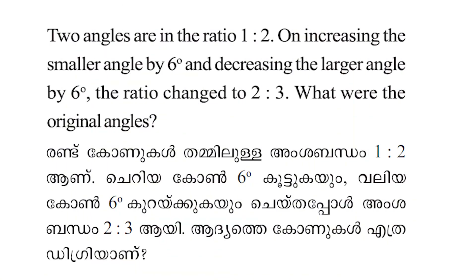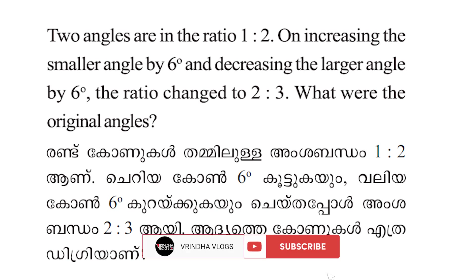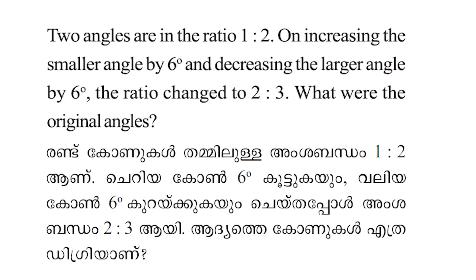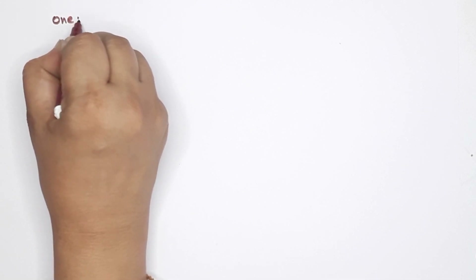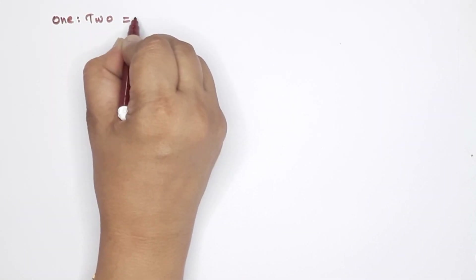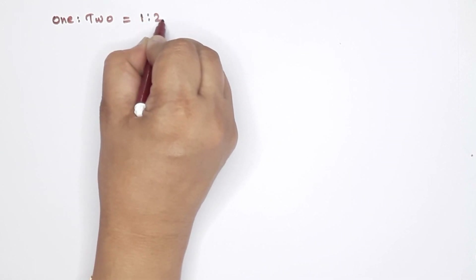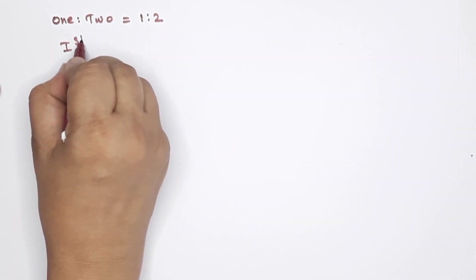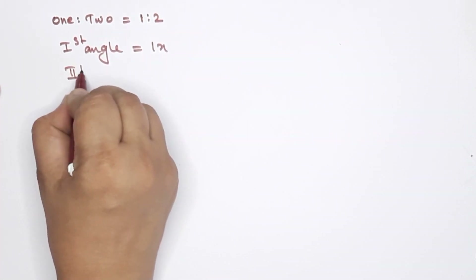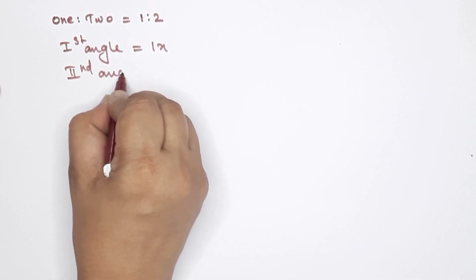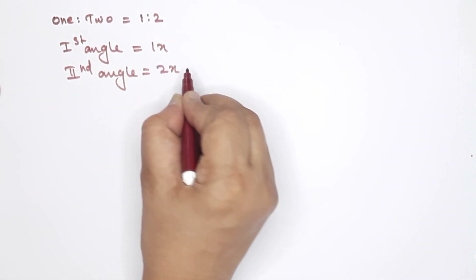Two angles are in the ratio 1 is to 2. On increasing the smaller angle by 6 degrees and decreasing the larger angle by 6 degrees, the ratio changed to 2 is to 3. What were the original angles? We have two angles with ratio 1 is to 2. The first angle is 1x and the second angle is 2x.